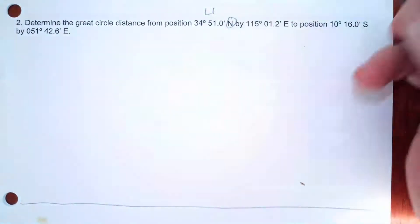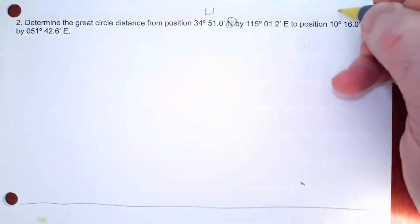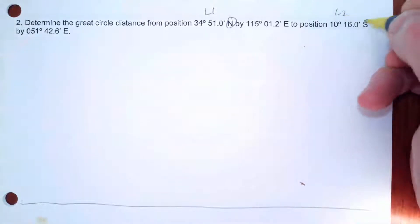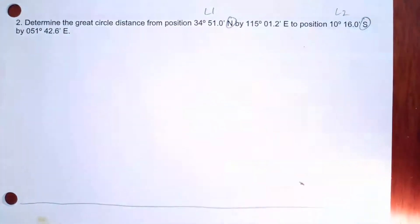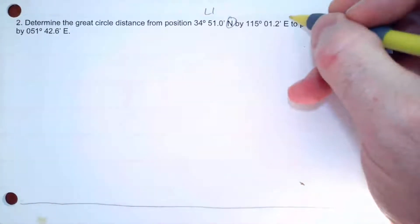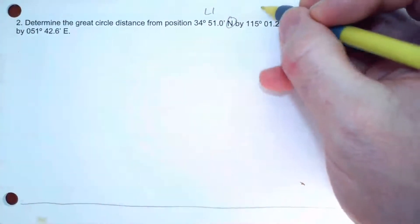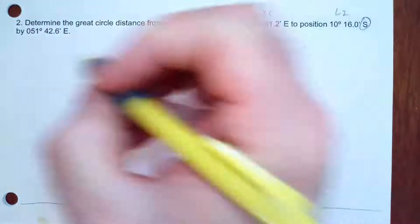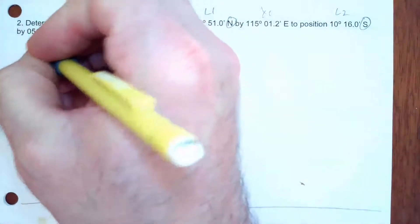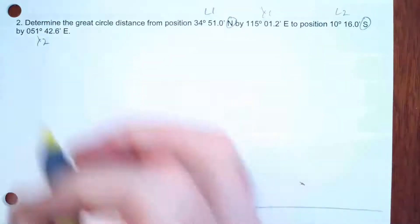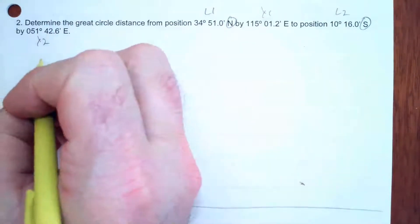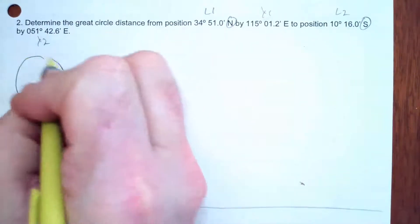So L1's sign is north and L2's sign is south. Here's longitude 1 and here is longitude 2, so let's start off with a little picture of the longitudes first.